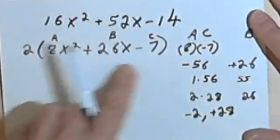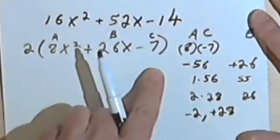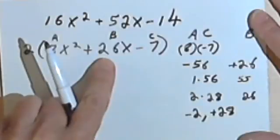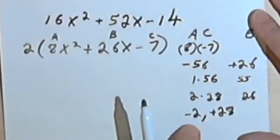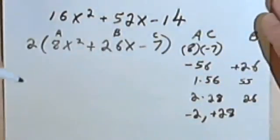Now I'll go back to my second-degree polynomial, this part in parentheses, and I'm going to break down this middle term into these two numbers that I've got.